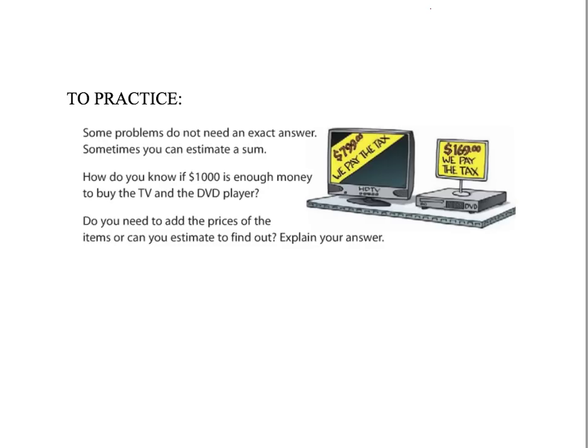Some problems do not need an exact number — that's why we estimate. How do we know if $1,000 is going to be enough money to buy a TV at $799 and a DVD player at $169? We need to estimate to find out, and we're going to try all three strategies: front-end rounding, compensation, and compatible numbers. Press pause and try it now.